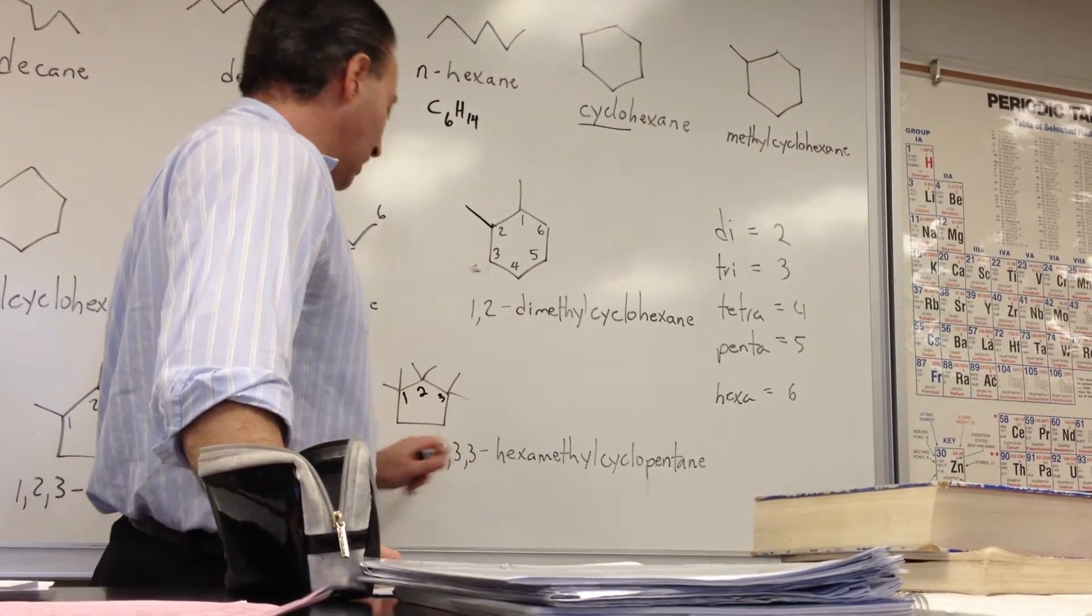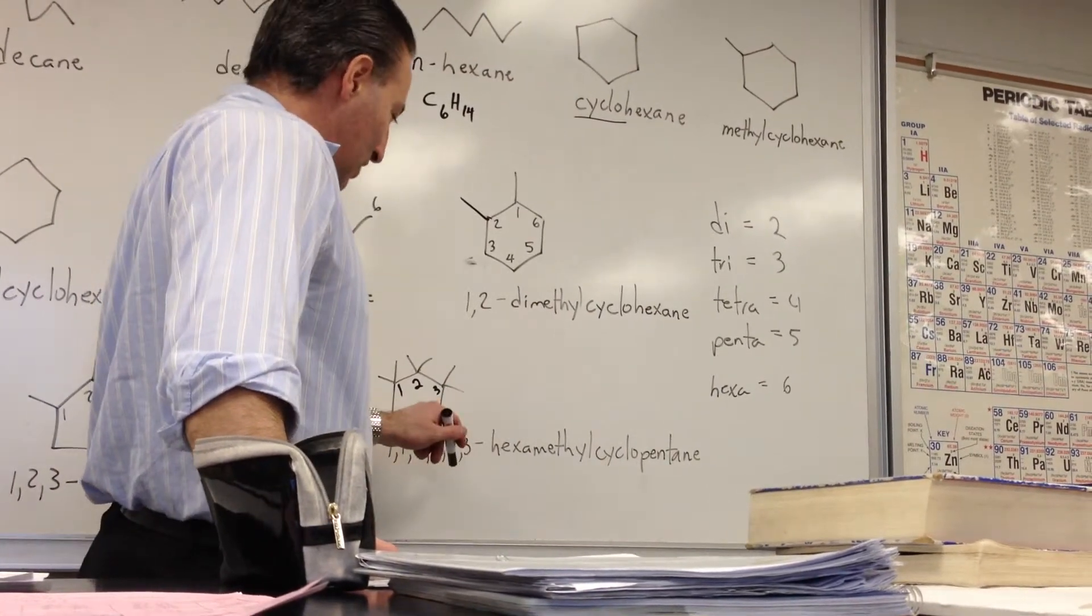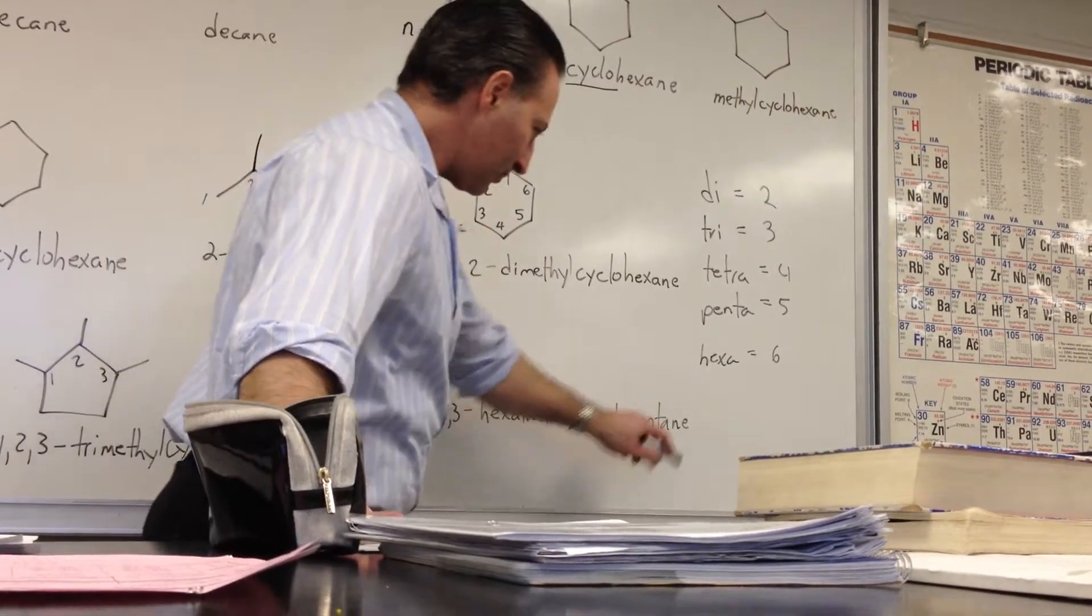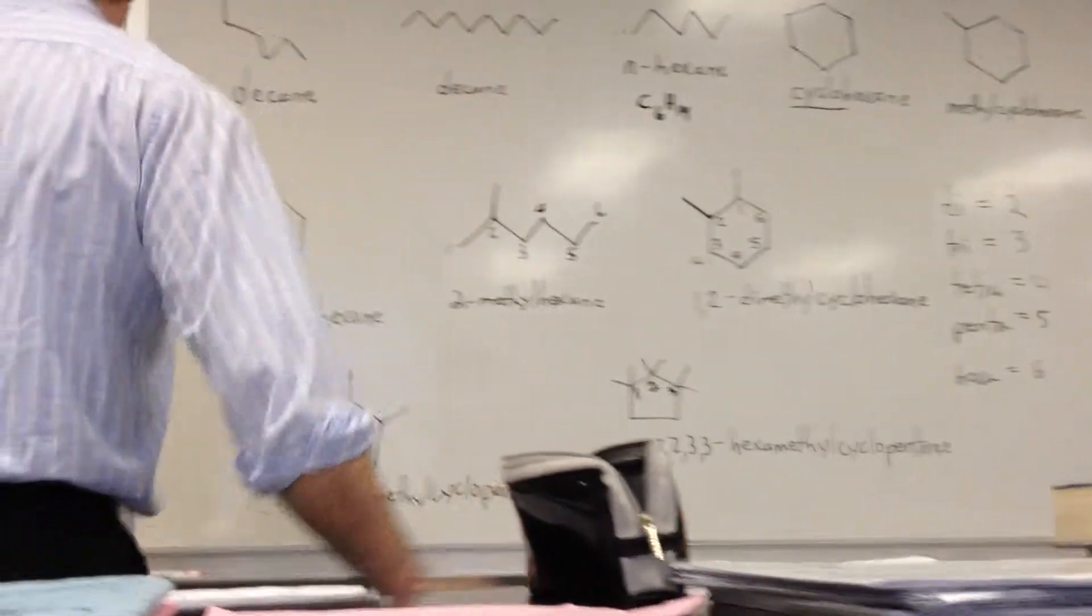Or we could even name it 1,2,3, but it would still end up being the same name: 1,1,2,2,3,3. Each number separated by a comma, dash, hexa to show that there's 6, methyl, cyclopentane.